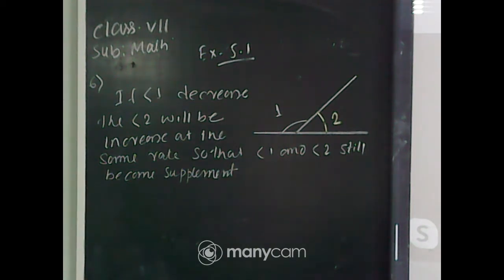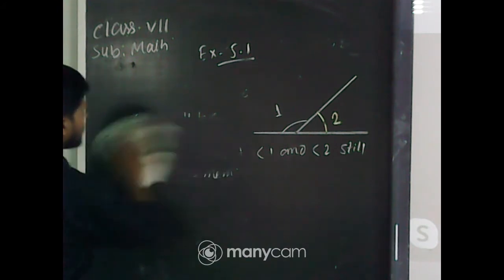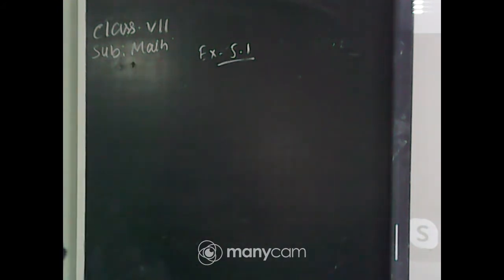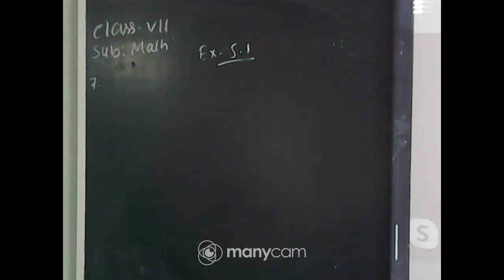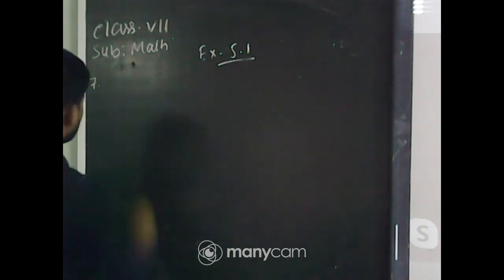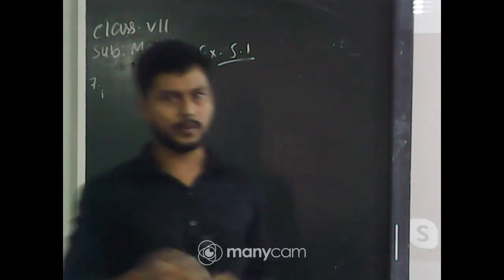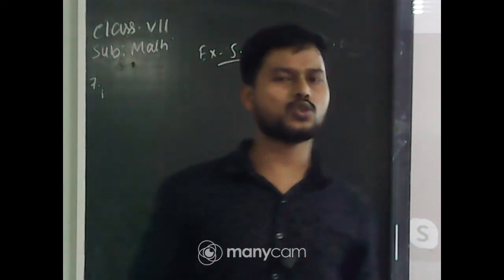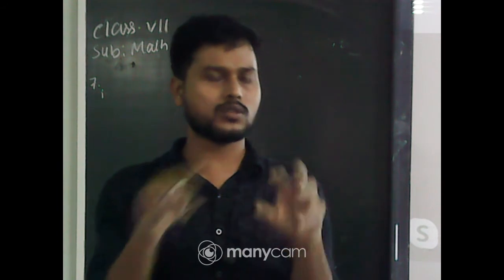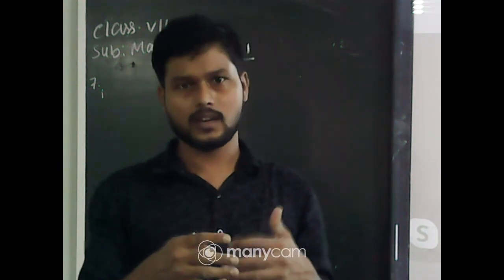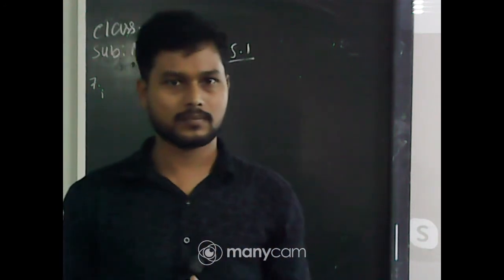Next question is: can 2 angles be supplementary if both of them are acute? This is question number 7. If 2 angles are acute angles, when you call an angle supplementary, their sum is equal to 180 degrees. Acute angle means the angle whose measurement is less than 90 degrees. So if I add 2 angles whose measurement is less than 90 degrees, their sum must be less than 180 degrees. That means the angles will not be supplementary to each other.